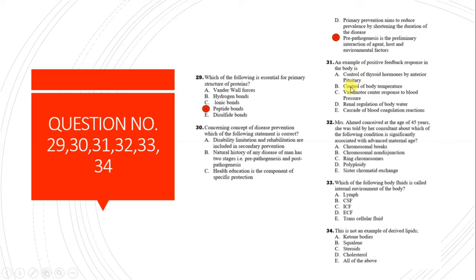Question 31: An example of positive feedback response in the body is the cascade of blood coagulation reactions. In blood coagulation, many clotting factors activate one another to cause more and more coagulation in the blood.